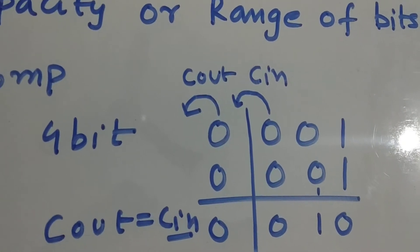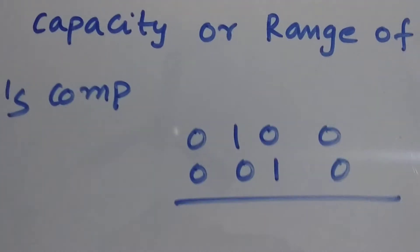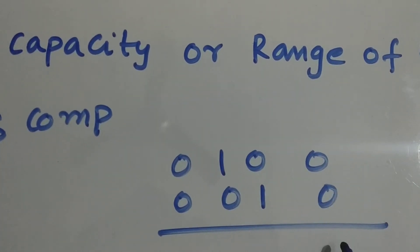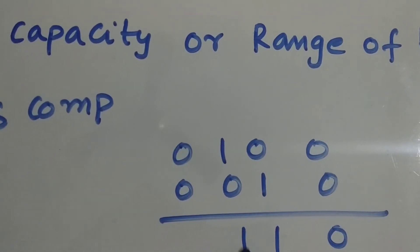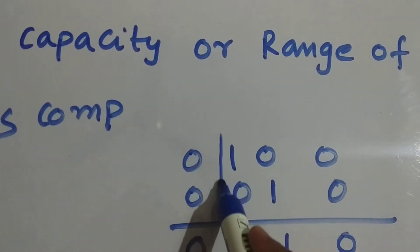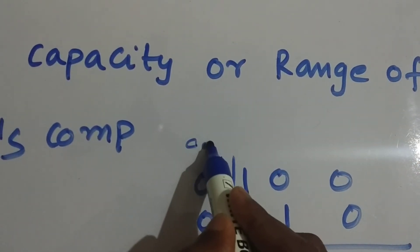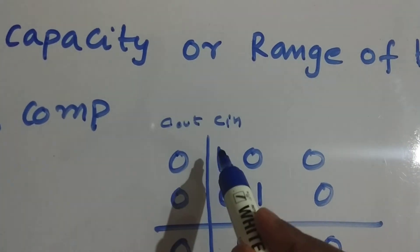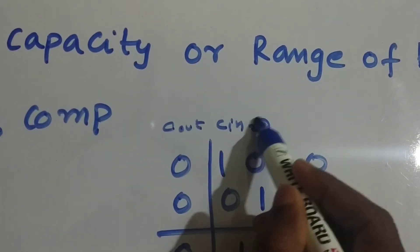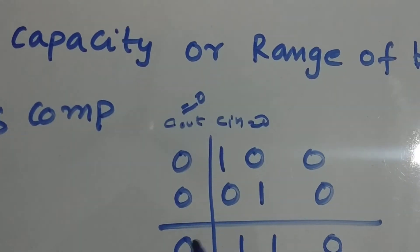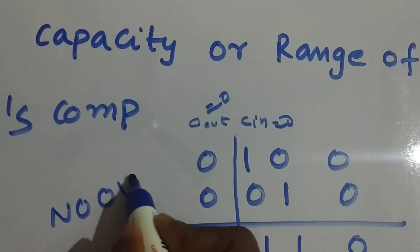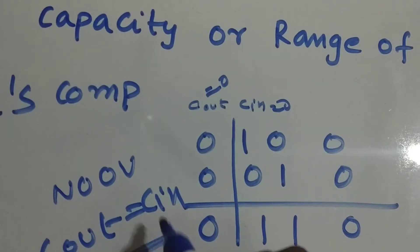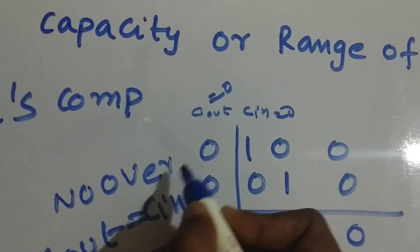Let me explain with one more example. I'm adding 0110 and 0100 in two's complement form. Drawing the line again, C_in equals zero and C_out equals zero. When both are zero — or more generally, when both C_out and C_in are equal — there is no overflow.